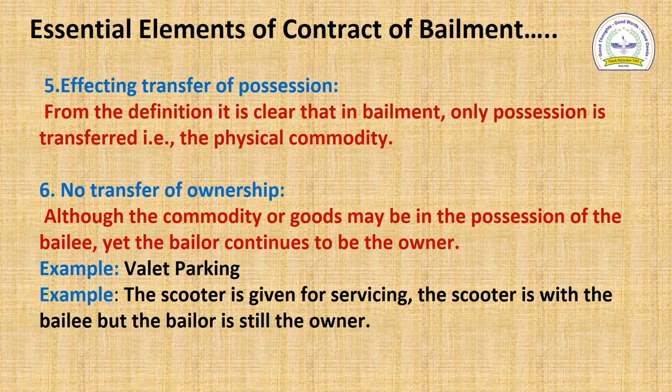The fifth essential element is transfer of possession. From the definition, it is clear that in bailment, only possession is transferred — meaning the physical custody of the goods is transferred from bailer to bailee. To understand this clearly, let us distinguish bailment from a contract of sale of goods, where both possession and ownership are transferred from seller to buyer. But in bailment, there is only transfer of possession from bailer to bailee.